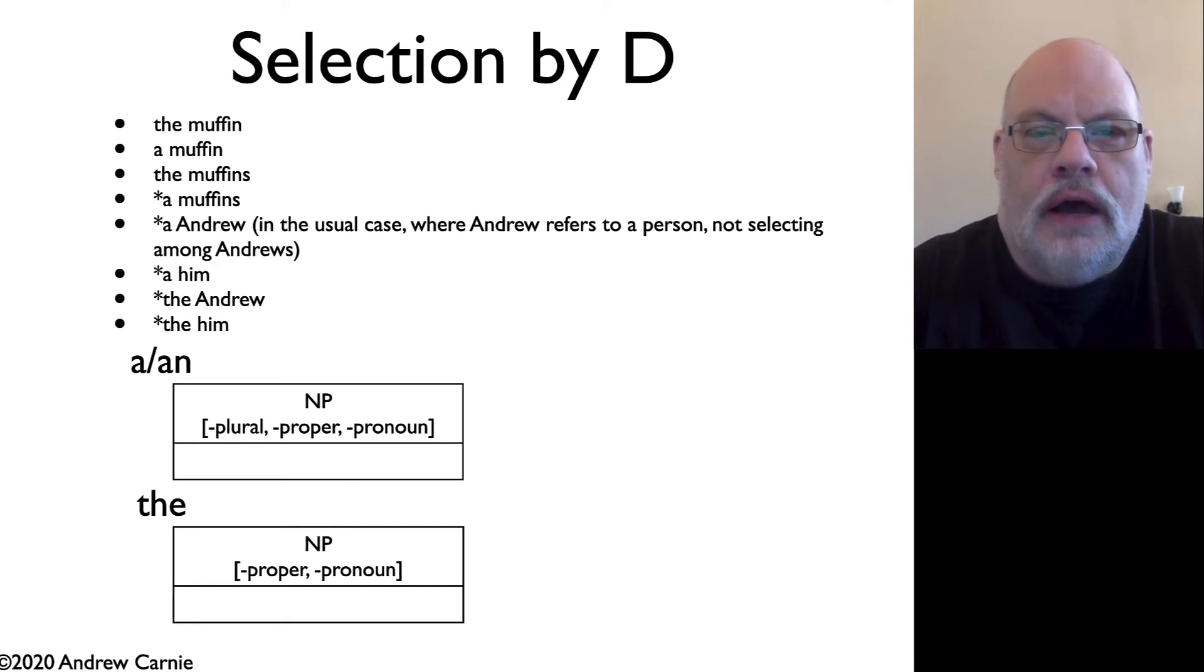Now let's turn to a different domain, the domain within the DP or NP. Let's look at the pattern we have for determiners. You can say the muffin, a muffin, the muffins. So what we have here is 'the' can appear with a singular noun, 'a' can appear with a singular noun, 'the' can appear with a plural, but 'a' cannot appear with a plural. So critically, we've got to distinguish 'the' from 'a' in that 'the' can appear with both singulars and plurals, but 'a' can only appear with singulars.